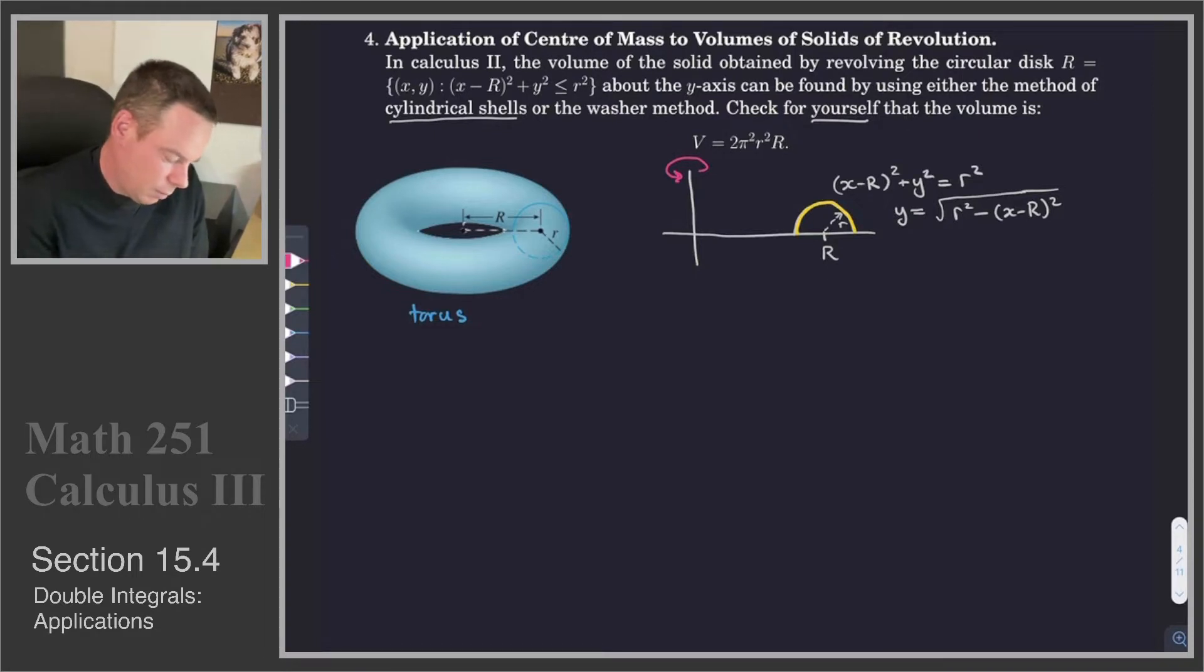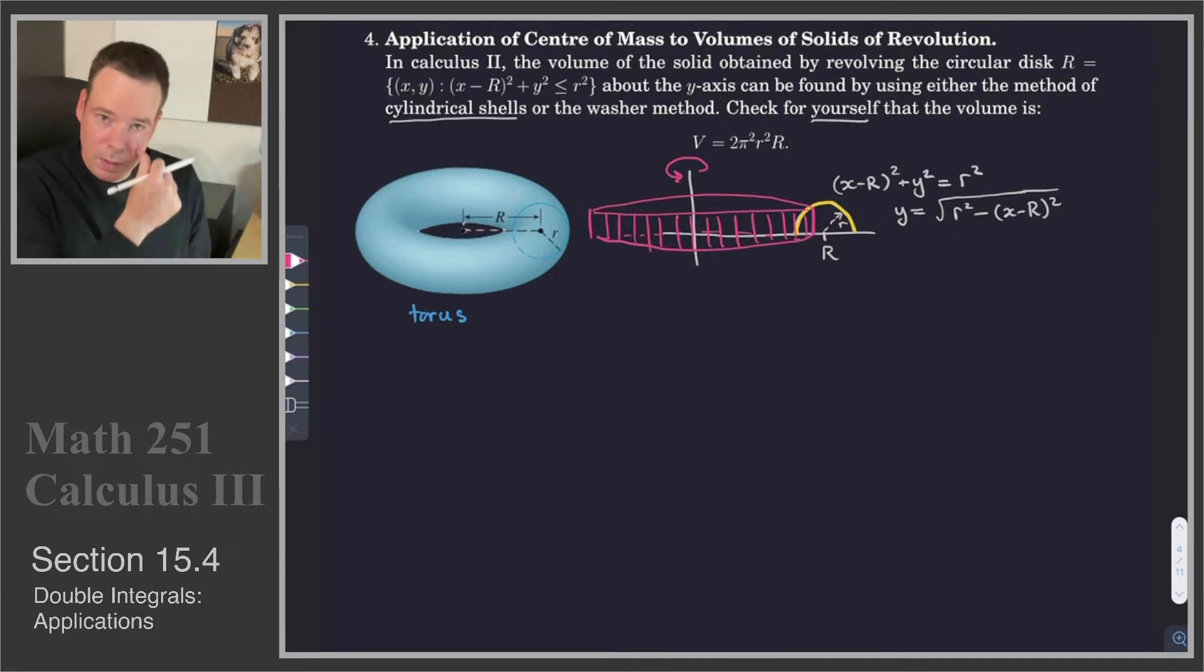How are we going to get that? I'm going to use the shell method. I'm going to take an arbitrary slice and do the revolution about the axes. That slice is going to produce a cylindrical shell. Then we find the area of this cylindrical shell and integrate over all of these areas to get the volume.